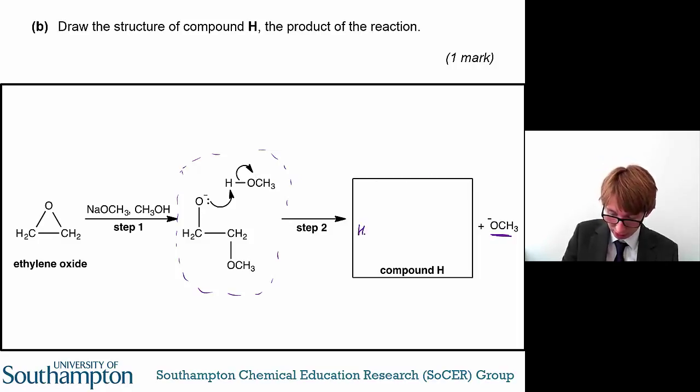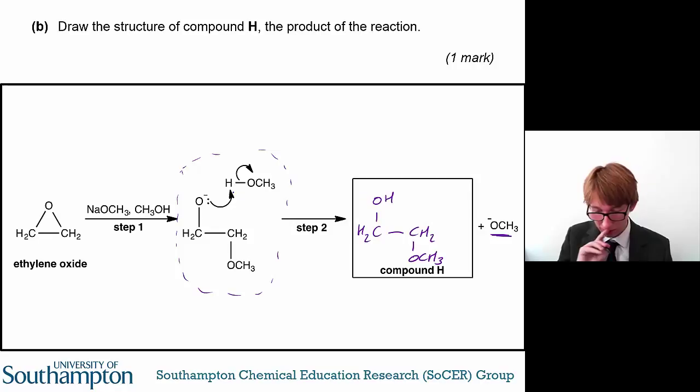So what we're seeing here, the product of this reaction, if you excuse my bad drawing, is OH there. So the oxygen has grabbed the hydrogen atom, and you've formed an alcohol in the end. So there you go, that's compound H, and if you get that completely correct, then you'll get one mark.